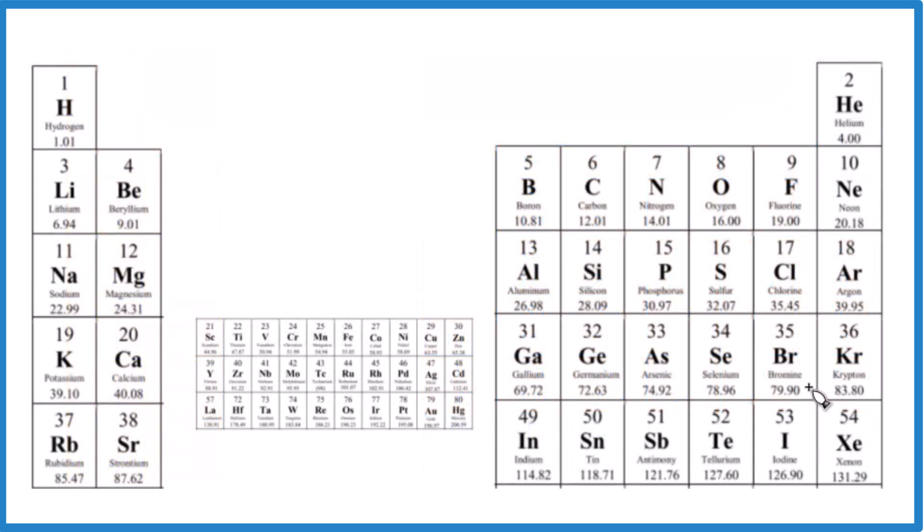Give it a try. Which is more electronegative, nitrogen or carbon? Nitrogen is closer to fluorine, it's more electronegative. How about boron or aluminum? Boron is closer to fluorine, more electronegative. It's also in the same period or row.